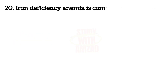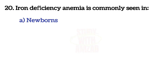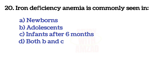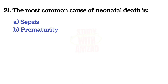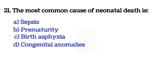Next question: Iron deficiency anemia is commonly seen in? The correct answer is D. Next question: The most common cause of neonatal death is? The correct answer is B — prematurity.